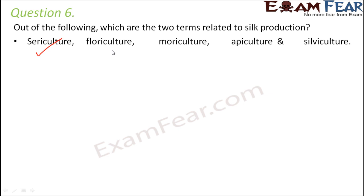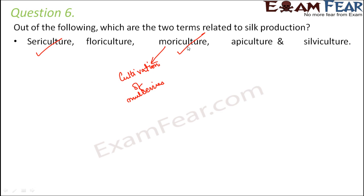Floriculture is not related to silk — it has to do with flowers. Moriculture is about the cultivation of mulberries. Mulberries are food for a lot of silk worms, and those silk worms produce mulberry silk, which is a very common type of silk. So moriculture is also related to silk production. Apiculture is related to honeybees, and silviculture is also not related to silk production. So only sericulture and moriculture are related to silk production.